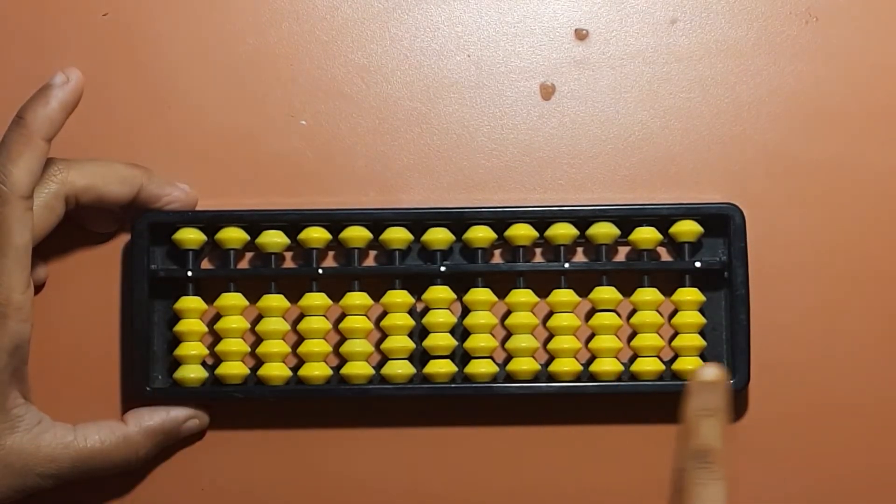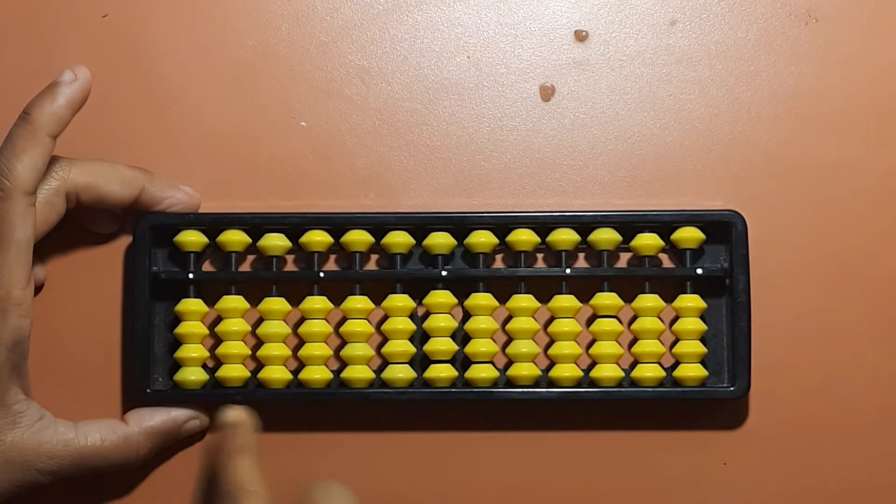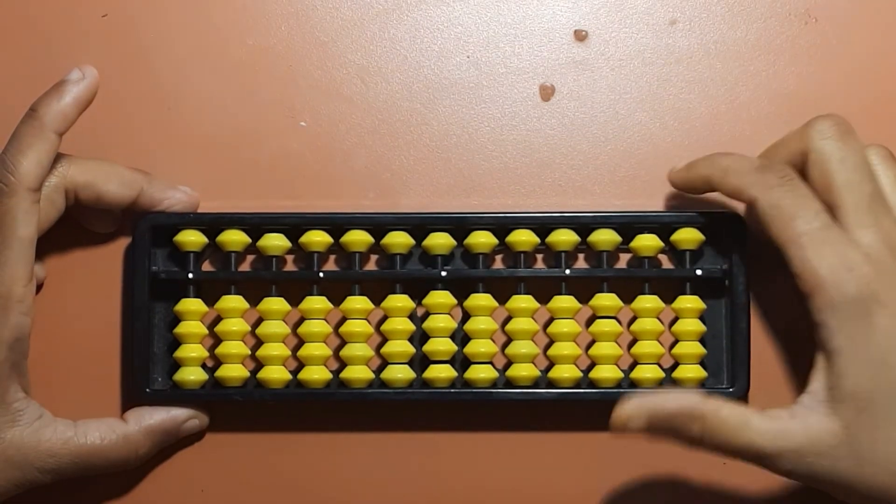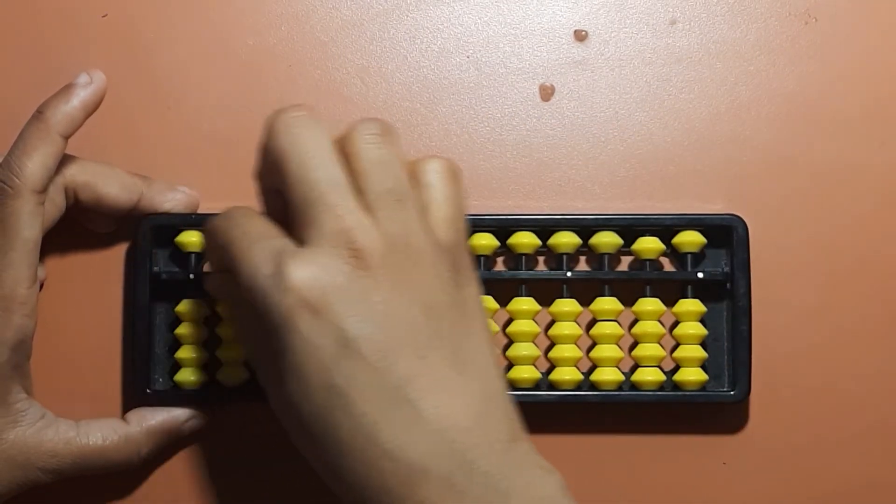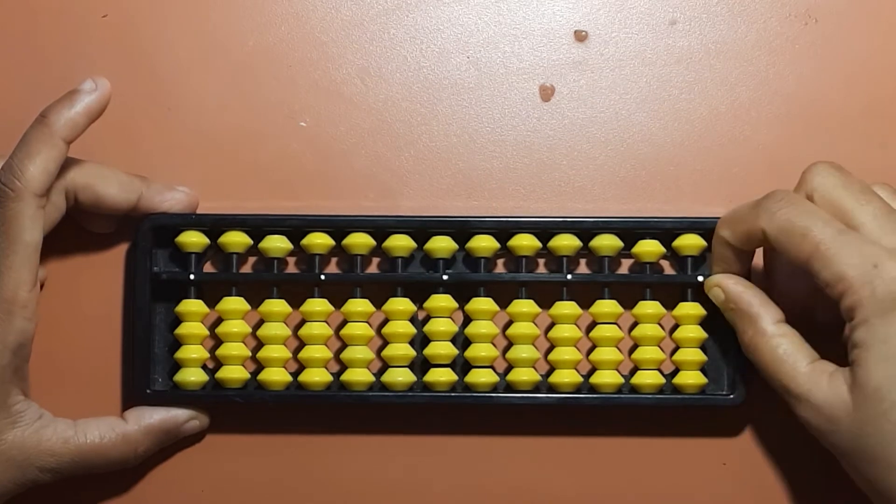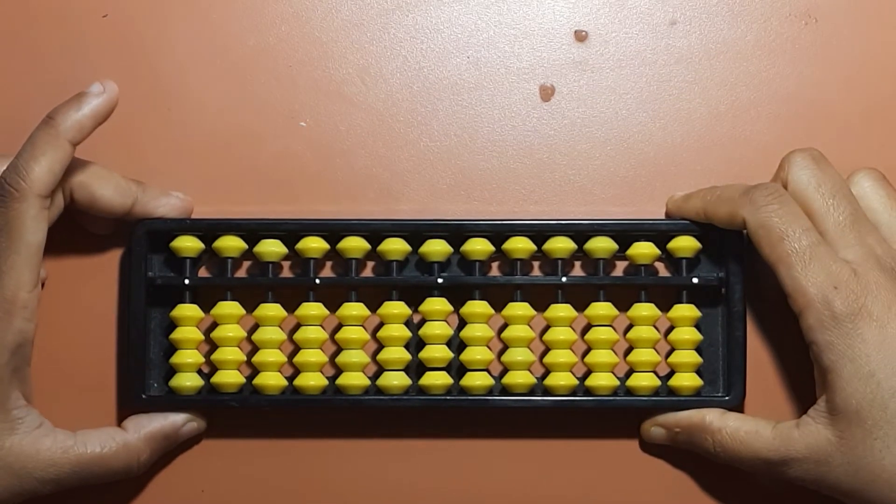The outer part of the abacus is called the frame. And this horizontal line is called the answer bar or the middle bar.